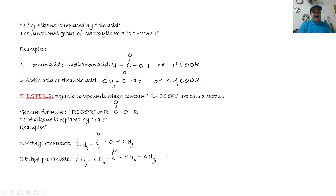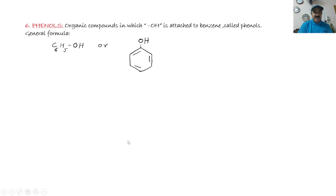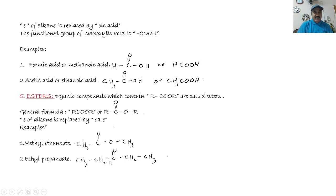'Oate' is added to the alkyl group which has the greater number of carbon atoms. Here the group with two carbons is ethane, so it becomes ethanoate, and the group with one carbon is methyl — giving methyl ethanoate. Another example: CH3CH2-O-C(=O)-CH2CH3 — the ethyl group gives one side, and propane (three carbons) takes the 'oate' suffix, giving ethyl propanoate.